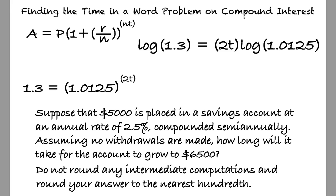To further isolate t, we can divide both sides of the equation by 2 log of 1.0125. Then substitute this equation into the calculator to yield t equals 10.56, after rounding to the nearest hundredth.